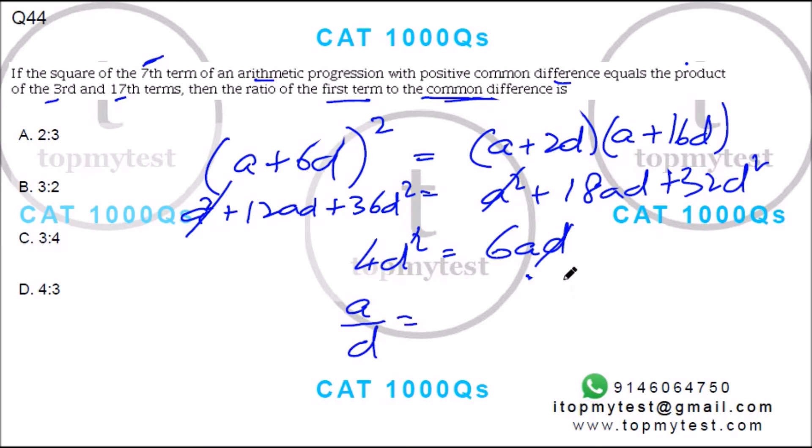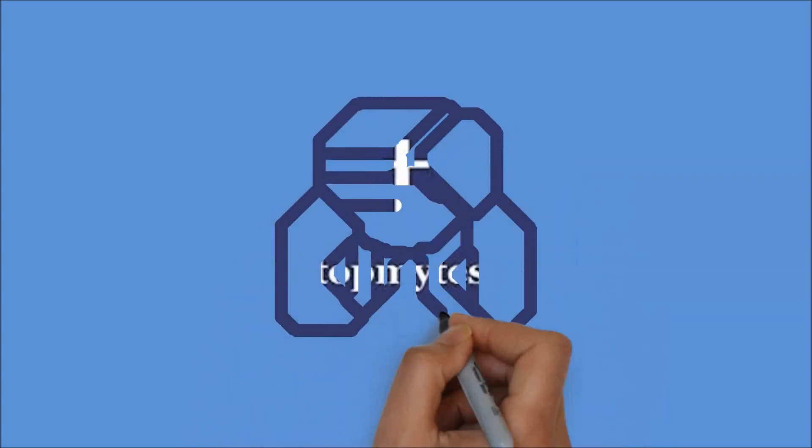by d equals 4/6, which is 2/3. Option A is your correct choice. It's pretty straightforward—that finishes this question.